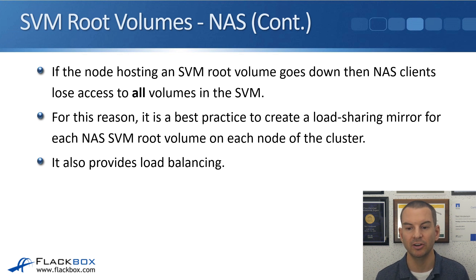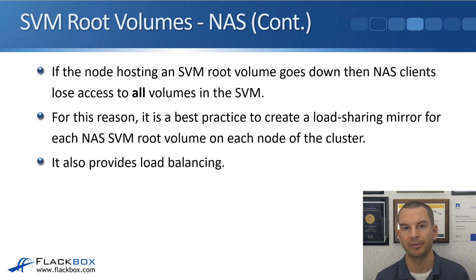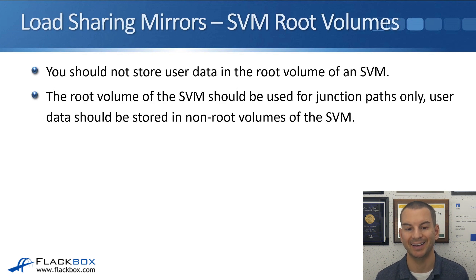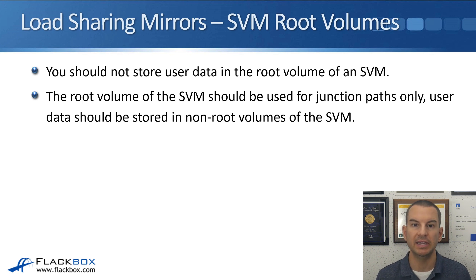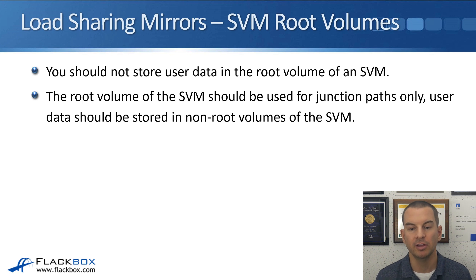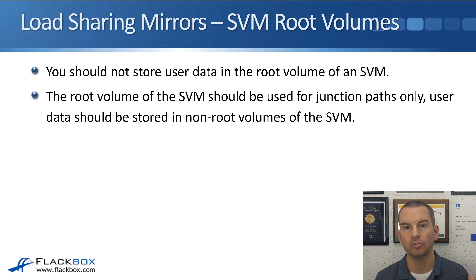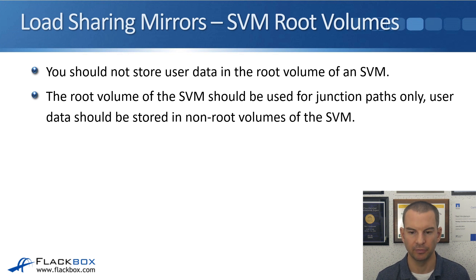If the node hosting an SVM root volume goes down, NAS clients lose access to all volumes in the SVM, not just the root volume. So it's best practice to create a load-sharing mirror for each NAS SVM root volume on each node of the cluster, providing both redundancy and load balancing. You should not store user data in the root volume of an SVM, because load-sharing mirrors on each node would consume space for that data across all nodes. The root volume of an SVM should always be empty and used only as the entry point to the namespace for junction paths. User data should be stored in non-root volumes hanging off of the root volume.